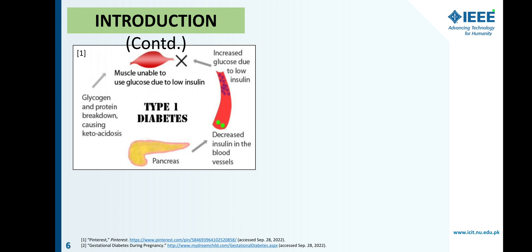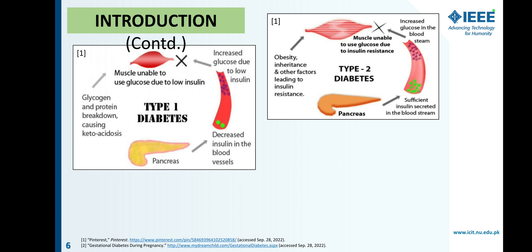Moving toward its types: Type 1 diabetes is mostly developed in children or at a younger age. About 5 to 10 percent of all cases suffer from this type. It is due to a genetic disorder where the body does not produce insulin, as the immune system attacks beta cells, which are responsible for producing insulin. Type 2 diabetes is due to unhealthy diet, less physical activity, or bad routine. About 90 percent of all cases suffer from this type. In this type, the body produces insulin but is not able to respond to it, so glucose remains in the blood and its level increases.